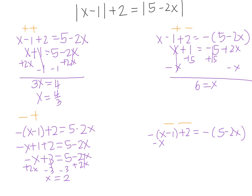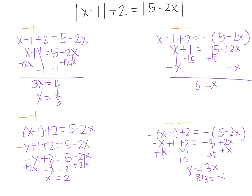In the last equation, I will have negative x plus 1 plus 2 is equal to 5 minus 2x. Adding x to both sides and adding 5 to both sides gives 3 plus 5 equals 8, and 2x plus x gives 3x. So then 8 thirds is equal to x.